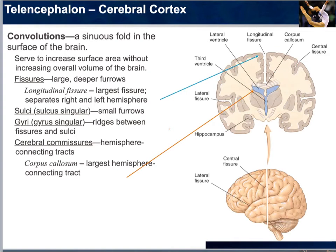The longitudinal fissure is the largest of them all, separating the right hemisphere from the left. We also have sulci — smaller, shallower furrows — with the singular form being sulcus. The ridges between the fissures and sulci are called gyri, or gyrus in the singular. The cerebral commissures are connecting tracts for the hemispheres; the largest is the corpus callosum, which facilitates communication from the left hemisphere to the right hemisphere.